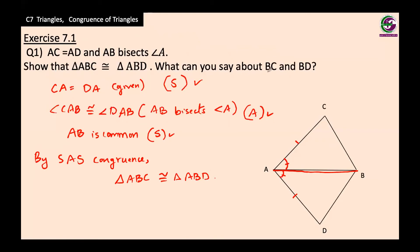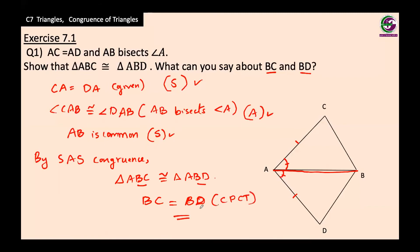The next question asks: what can you say about BC and BD? Look at the position of the letters — BC and BD are both the last two letters of their respective triangles, so they are corresponding parts. Therefore, BC equals BD because they are corresponding parts of congruent triangles.